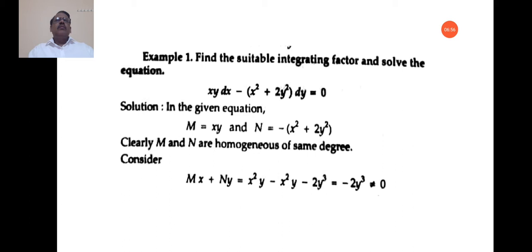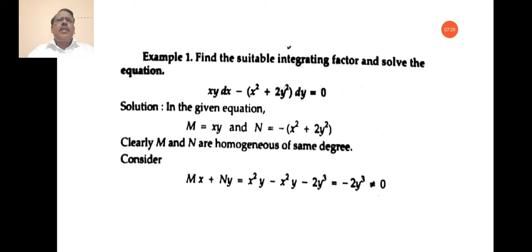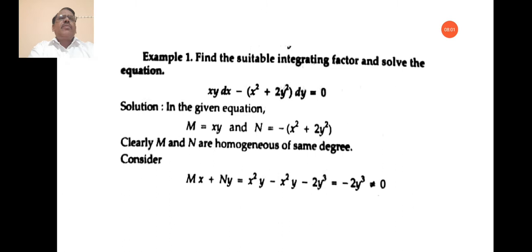Find the suitable integrating factor and solve the given differential equation. Let xy dx − (x² + 2y²)dy = 0. Observe that this is in the form Mdx + Ndy. Comparing, M = xy and N = −(x² + 2y²). Clearly ∂M/∂y ≠ ∂N/∂x, and hence it is not an exact differential equation. We may apply Rule 1. Observe that M and N are homogeneous functions of degree 2.